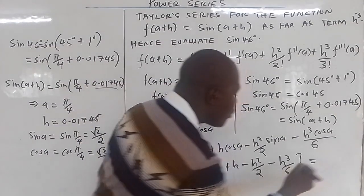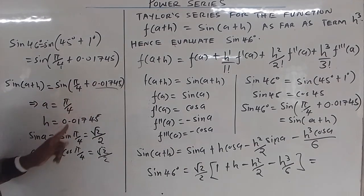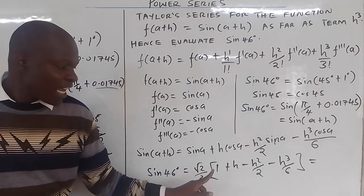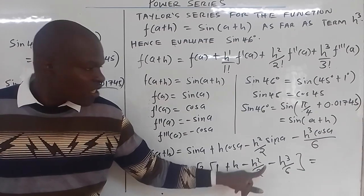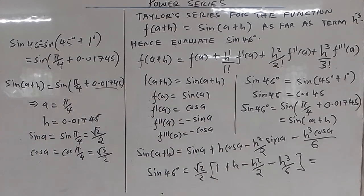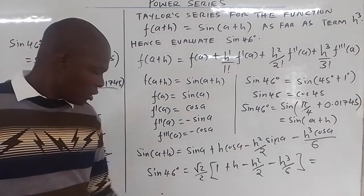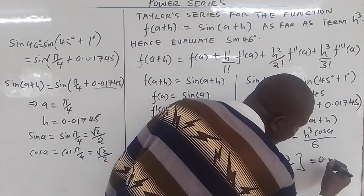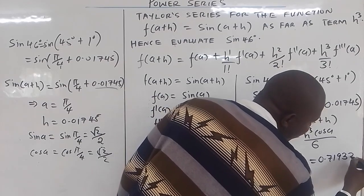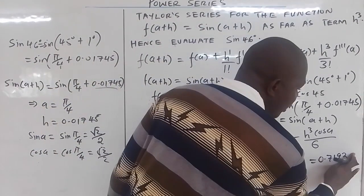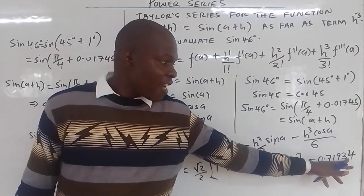From there, h = 0.01745. You compute root 2 over 2, in bracket: 1 plus 0.01745, minus 0.01745 squared over 2, minus 0.01745 cubed over 6. You were told 5 decimal places. The result is 0.71934.